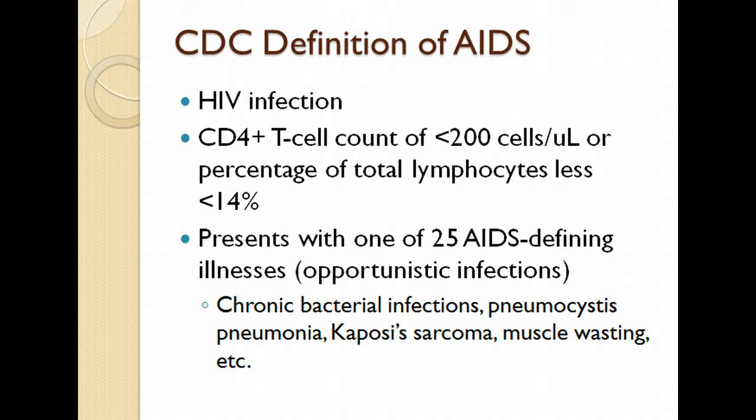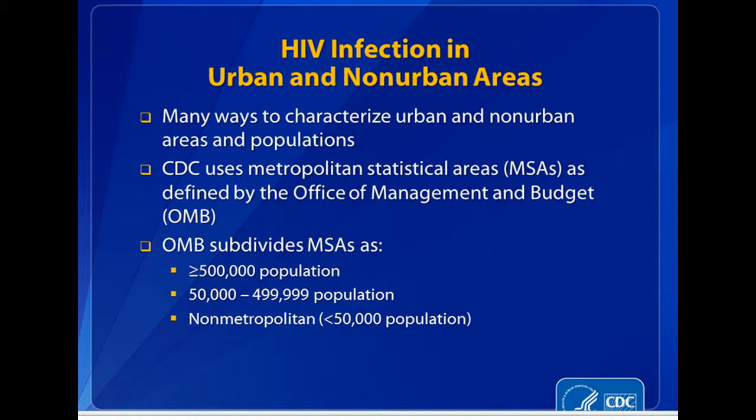These AIDS-defining illnesses include lung diseases, Kaposi's sarcoma — which looks like a type of skin cancer — severe cachexia, and muscle wasting as well.